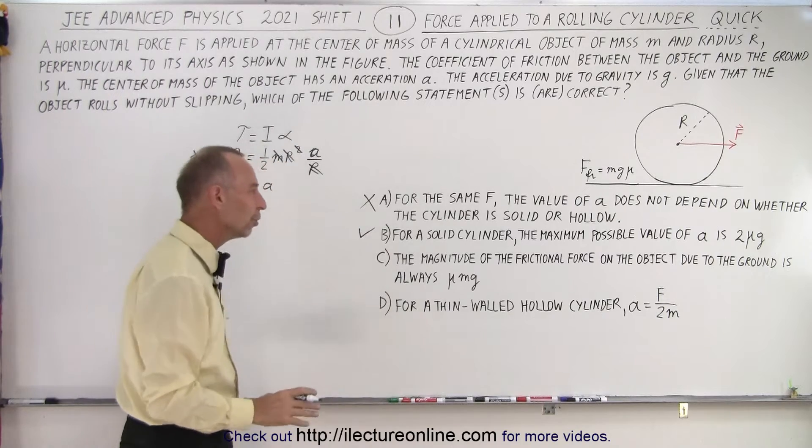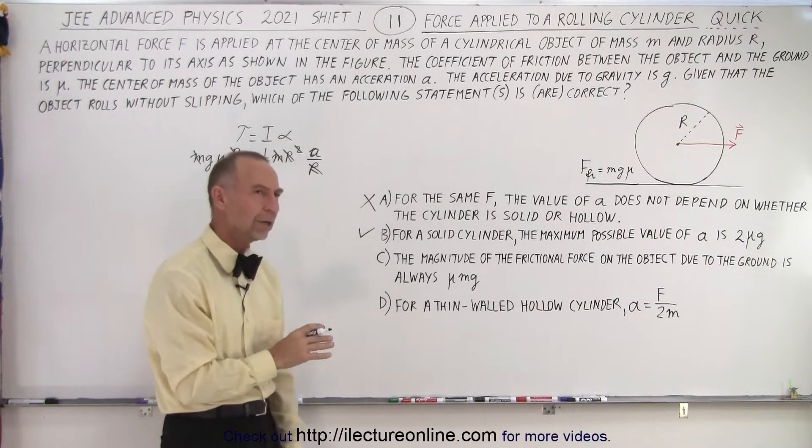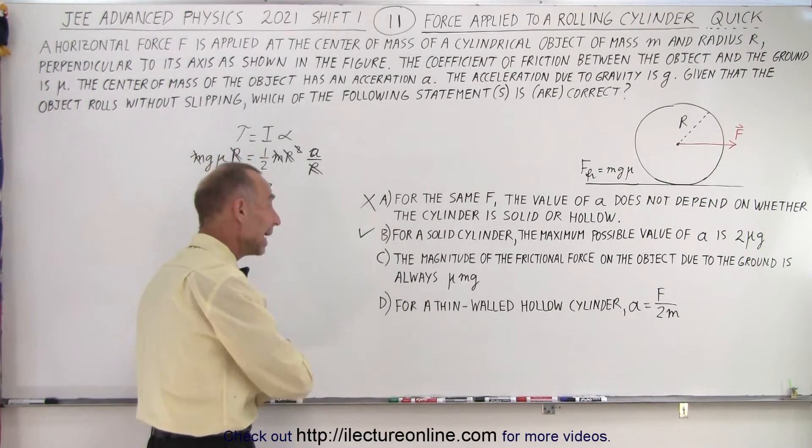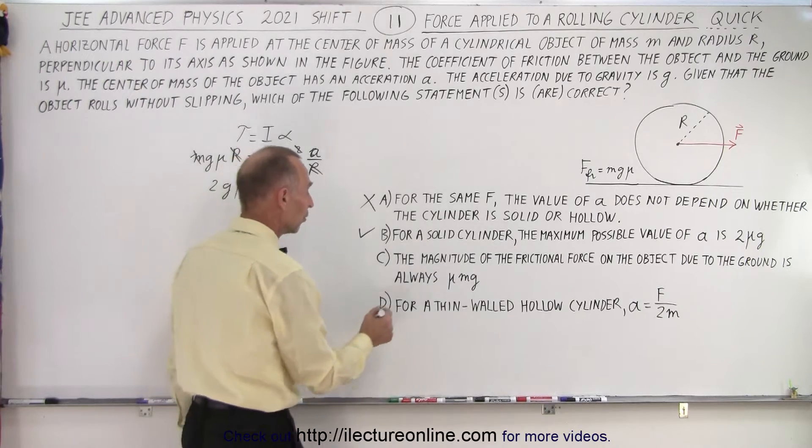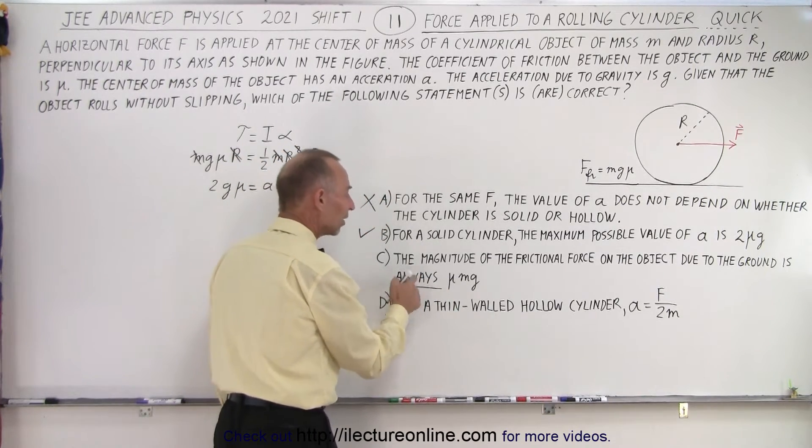Answer c, the magnitude of the frictional force on the object due to the ground is always μmg. Well, we know that cannot be true because the friction force is always going to be between zero and the maximum friction force, so when we see the word always we realize that is not the case. It's only at its maximum value, so we know that one is false.